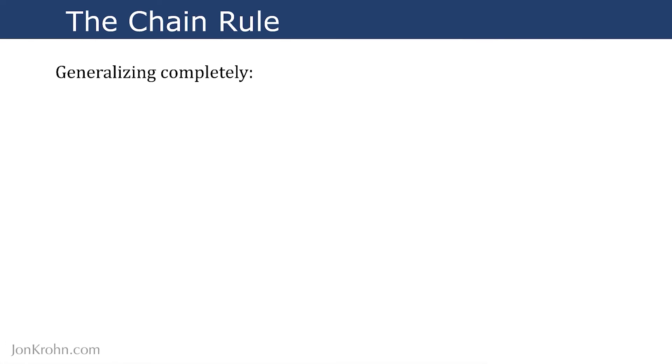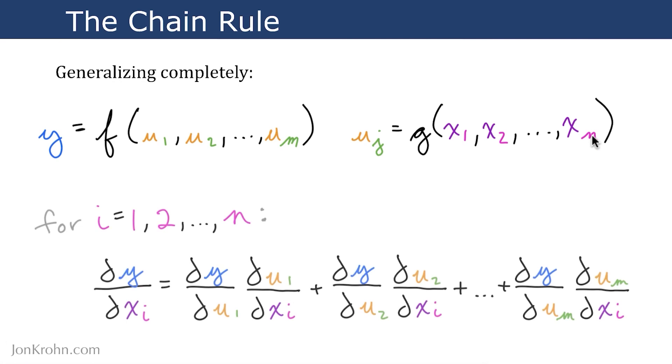Generalizing completely what I've shown you with examples in the past two slides: if you have some output y that's a function of any number of variables u—so up to m variables u₁, u₂, ..., uₘ—and each of those variables, we can call any one of them uⱼ, where j is an index that could be 1, 2, all the way through to m. Each u is itself a function of many inputs, and we could have up to n inputs x, so x₁, x₂, all the way through to xₙ.